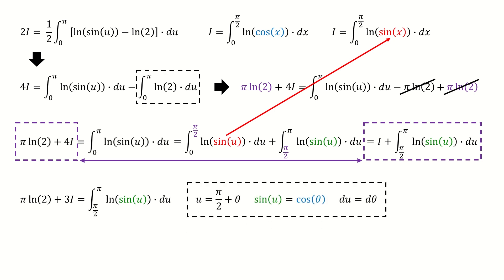Next, we define u equals half pi plus theta, so sine u equals cosine theta, and du equals d theta.